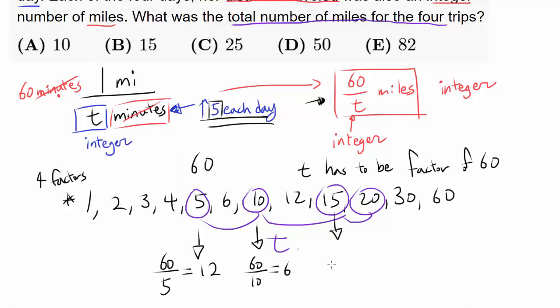And for 15, we're going to get 4. For 20, we're going to get 3. 12 plus 6 plus 4 plus 3, that's 18, that's 7. Adding all of them up gets us 25.